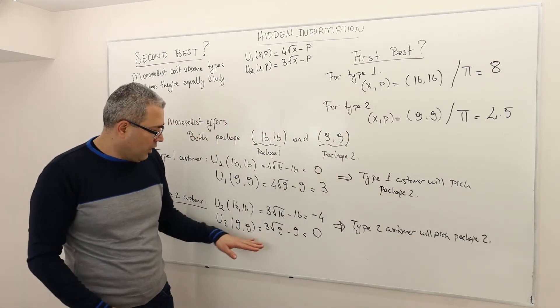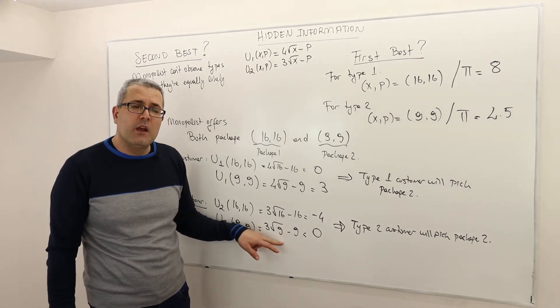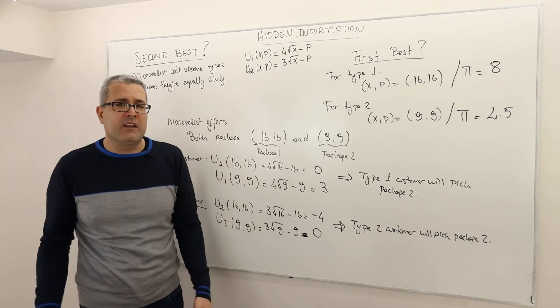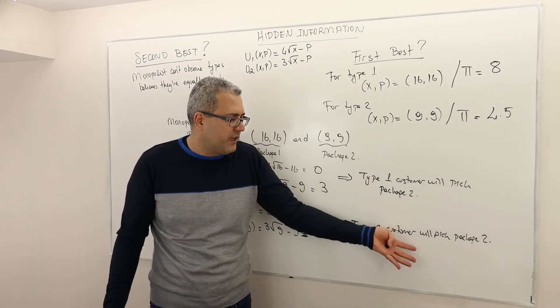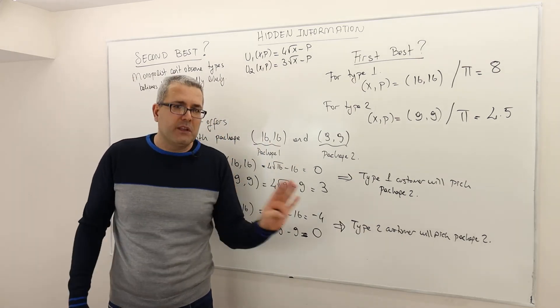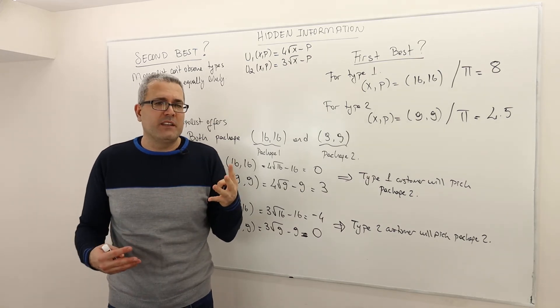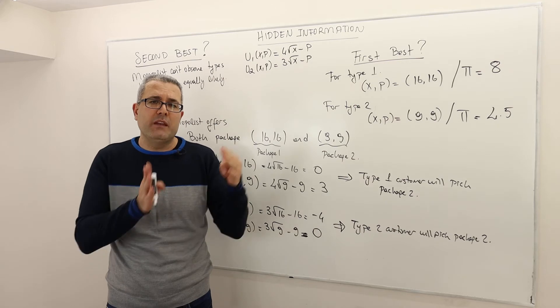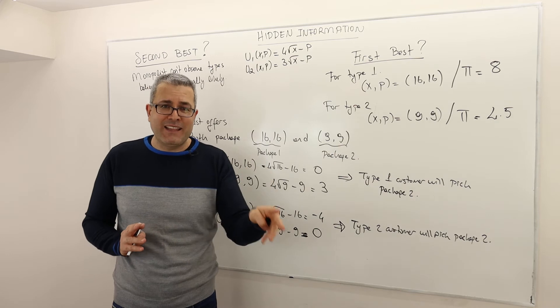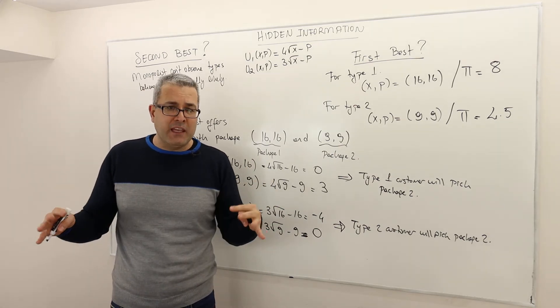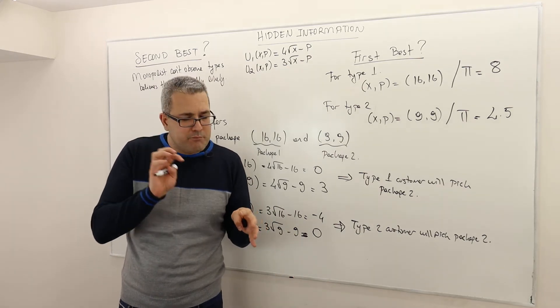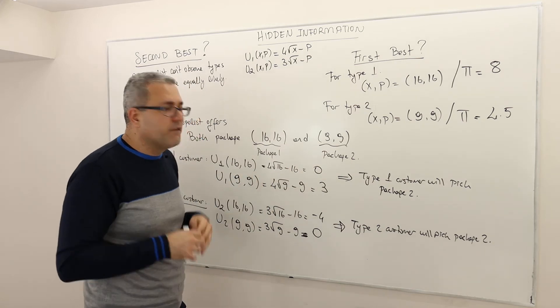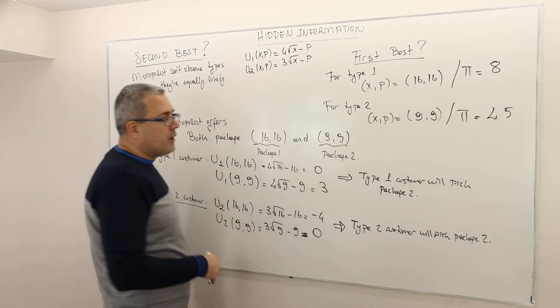You may say, well, the utility of type two is zero if he buys package two, but if he doesn't buy anything, his utility is also zero. So he's indifferent between buying package two and not buying anything. So why do we think that he's going to buy the package two? Well, for simplicity. The detailed argumentation has no point. For simplification, you can always assume that whenever a customer is indifferent between buying a package and not buying at all, he will always buy that package. So the indifferences can be break in favor of buying the package. Just make this assumption. Trust me, calculations will be much simpler. And by the way, this assumption is not really going to change the fundamentals of our analysis.